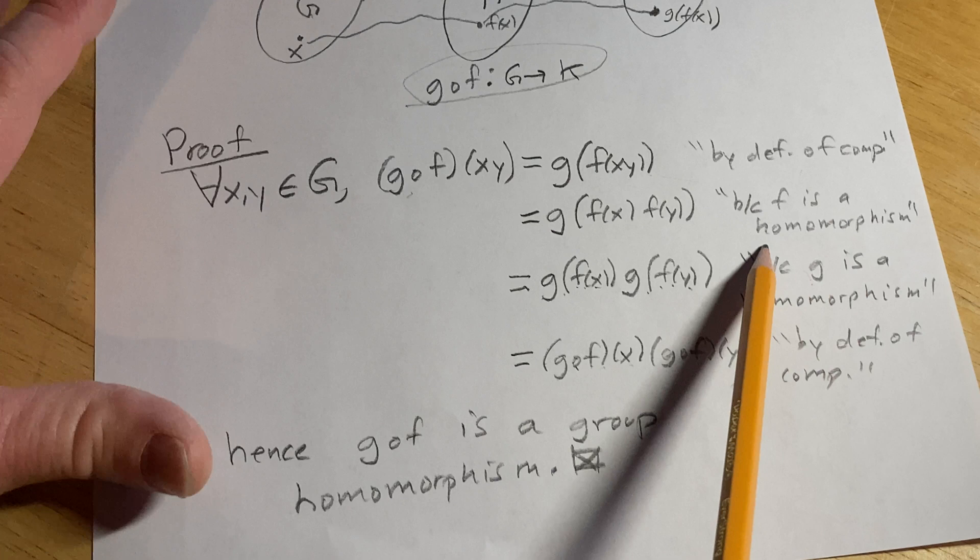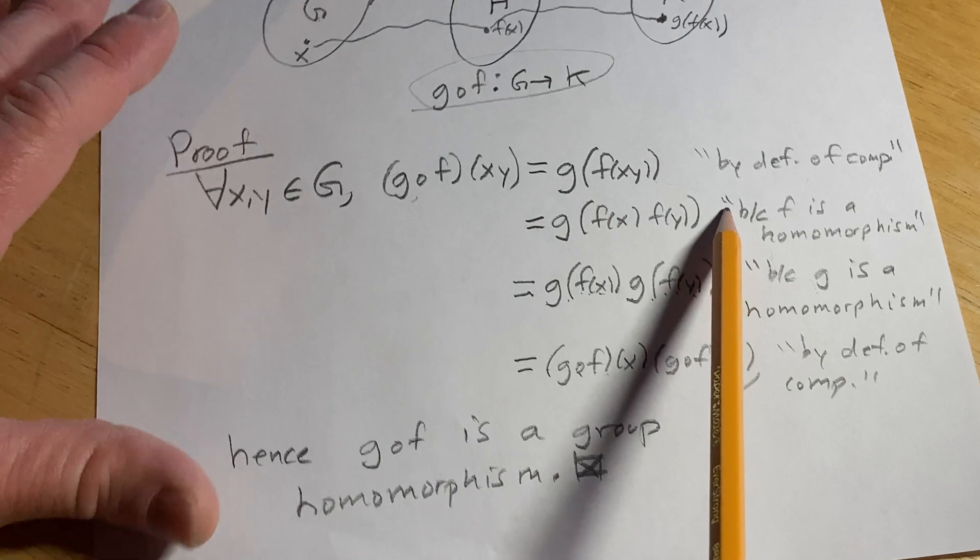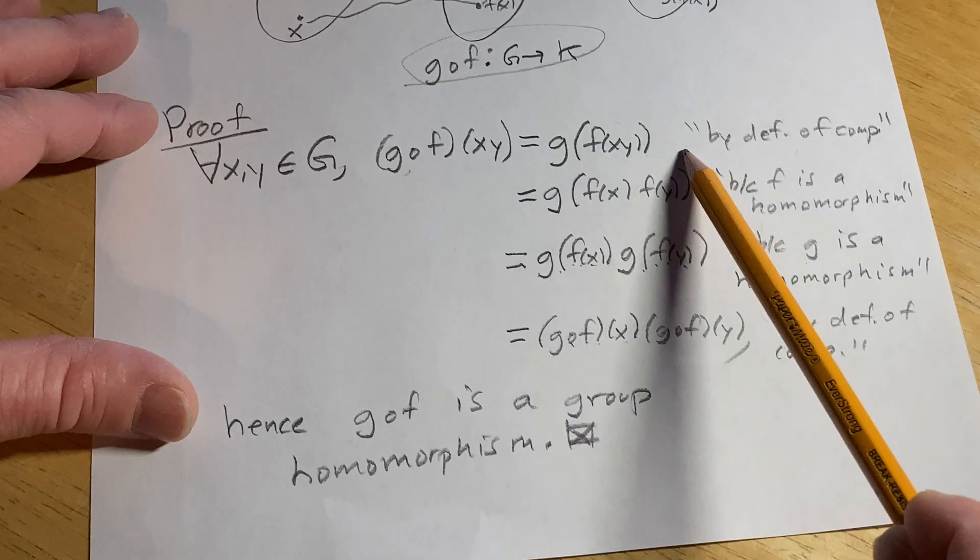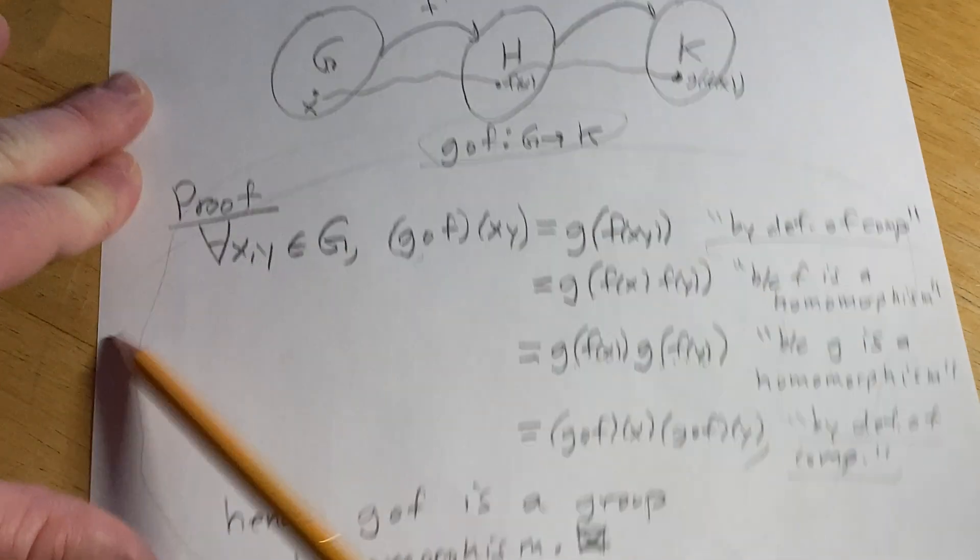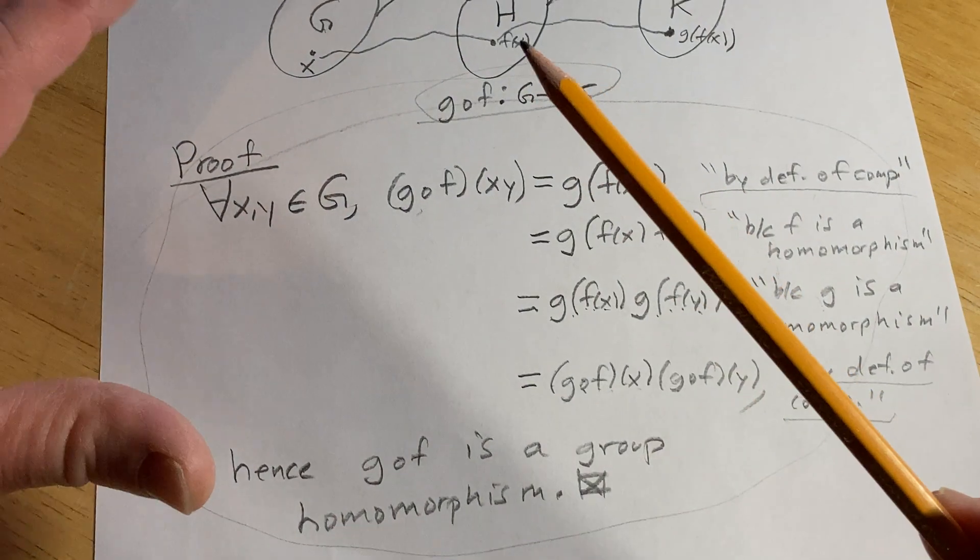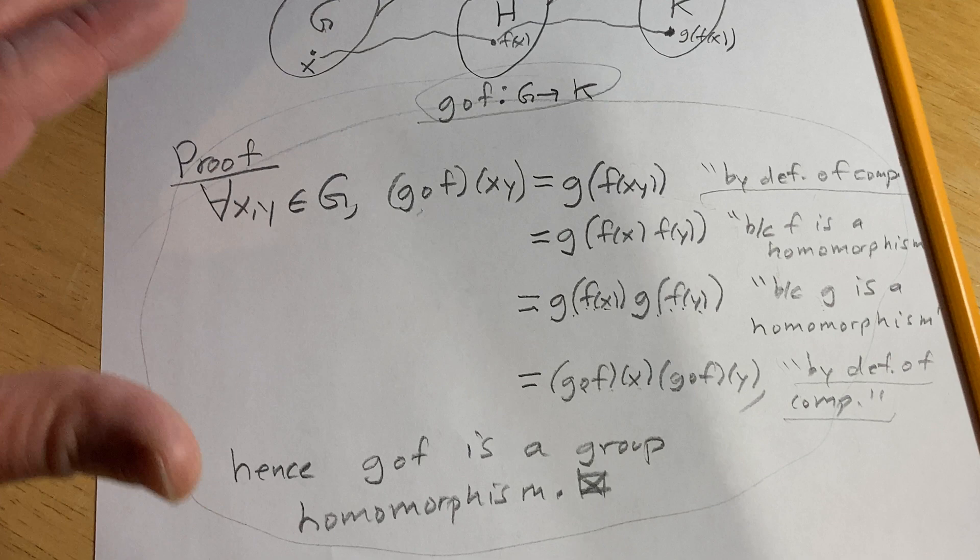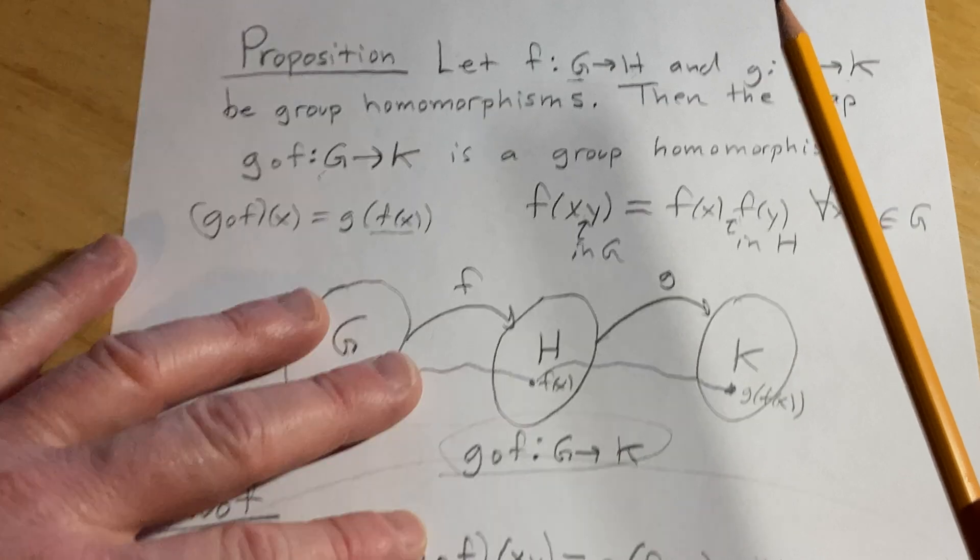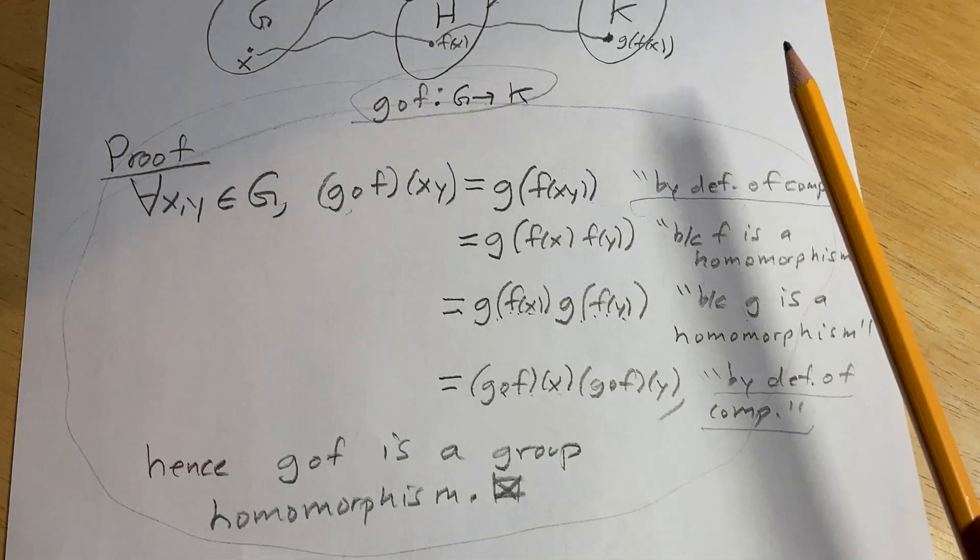You know, every single reason is explained. And I think whenever you're writing proofs, it's really important to at least be able to understand why every single step follows. Like, even the definition parts are written here, right? Definition of composition. So airtight proof. Always try to create proofs where you know why every single step follows. And if you don't know, then that's the challenge. The challenge is to figure that out. So, good stuff. Hopefully this video has taught you even just a little bit of mathematics. Even if you learn one thing, then I think it's worth it. Until next time, good luck and take care.